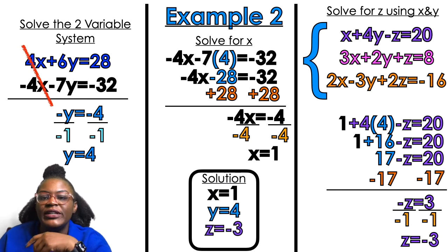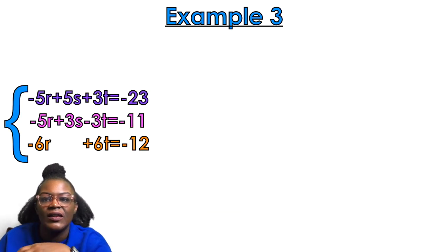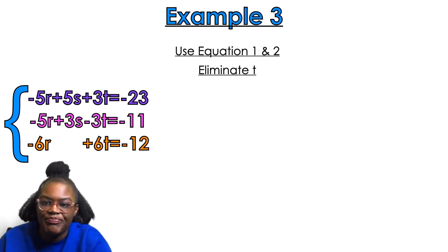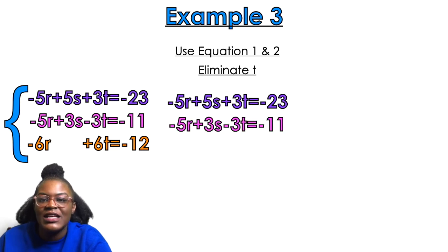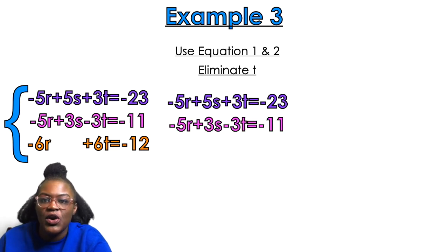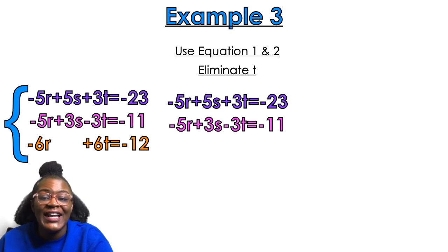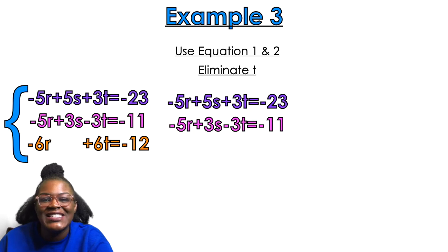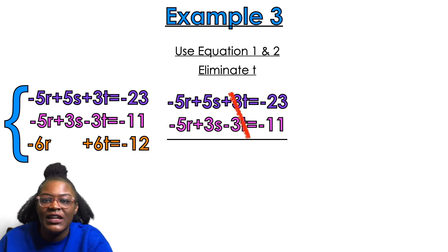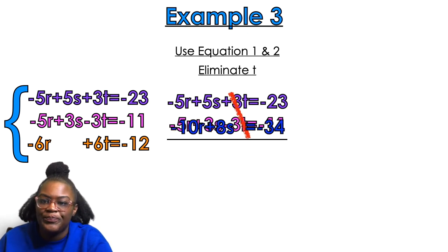Example number 3. Again, we're going to use equation 1 and equation 2 to eliminate T — that's purple and pink. Lucky for us, we already have opposites for T, which we love to see. So I get rid of the opposites and add down to get negative 10R plus 8S equals negative 34.